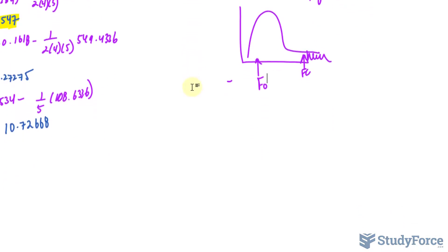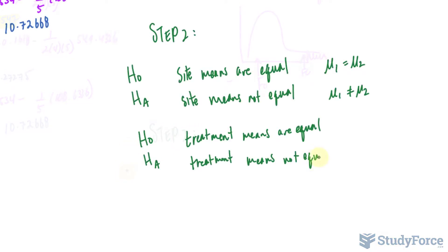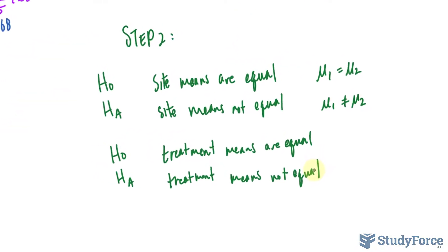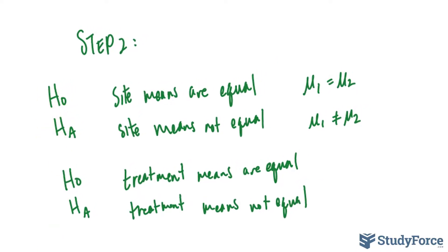And again, we have to create two new hypotheses, one for the site and one for the treatment. As you can see, I've gone ahead and written down the two sets of hypotheses. For the first one is for site, and the bottom one is for treatment, and that can be represented symbolically as mu1 equals mu2 equals mu3 equals mu4 because there are four treatments, and this one I can say at least two means differ.